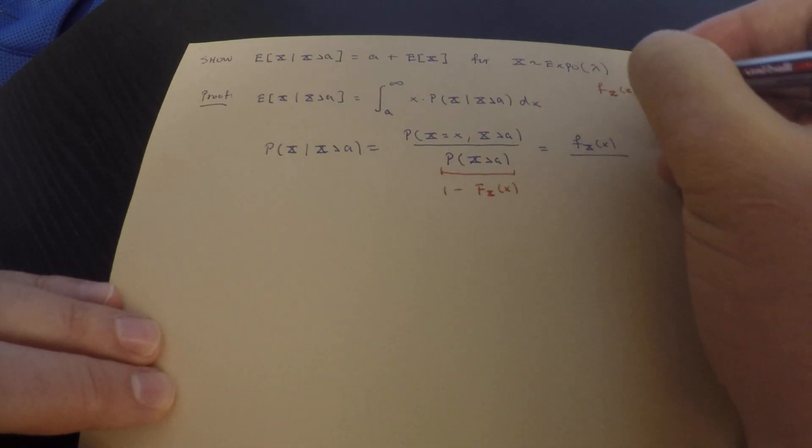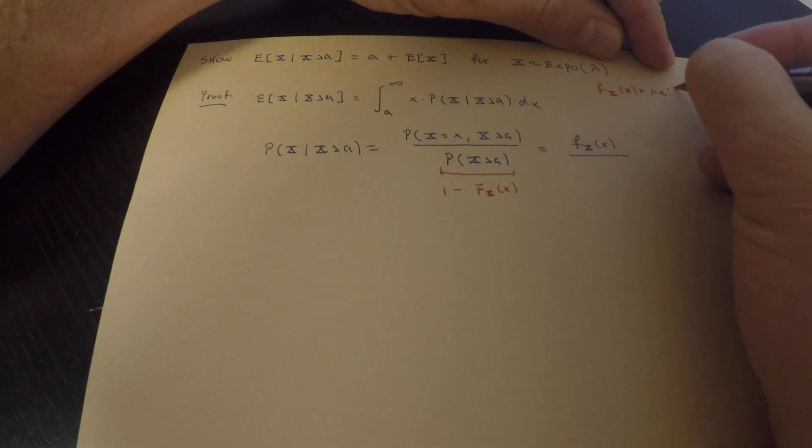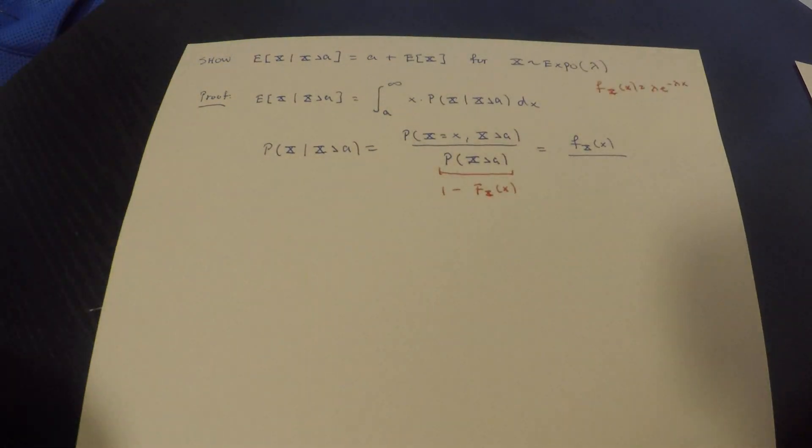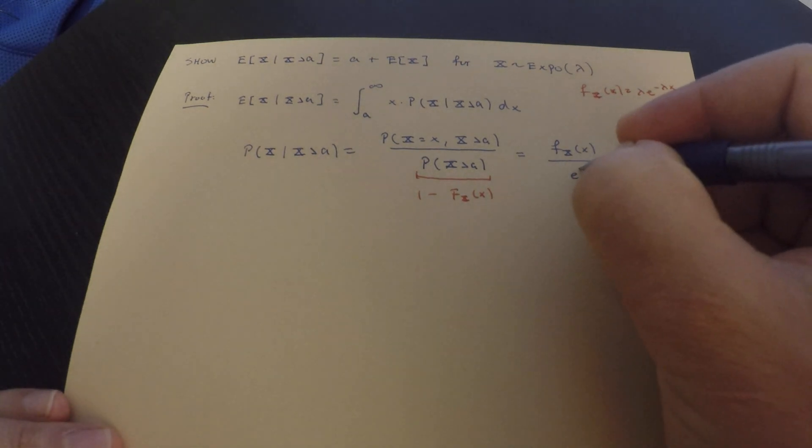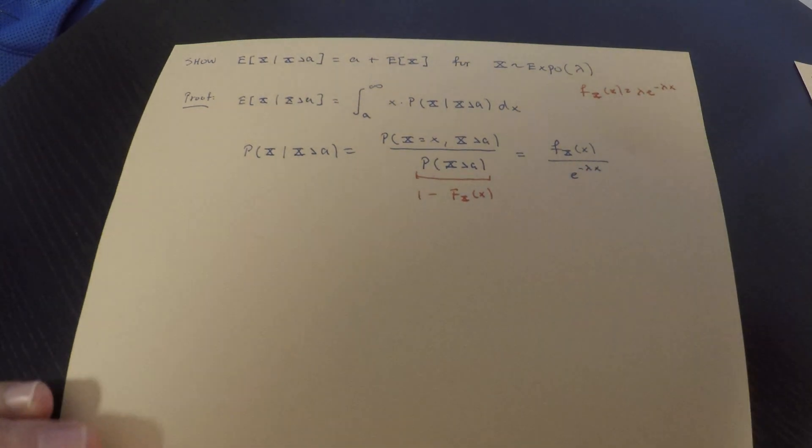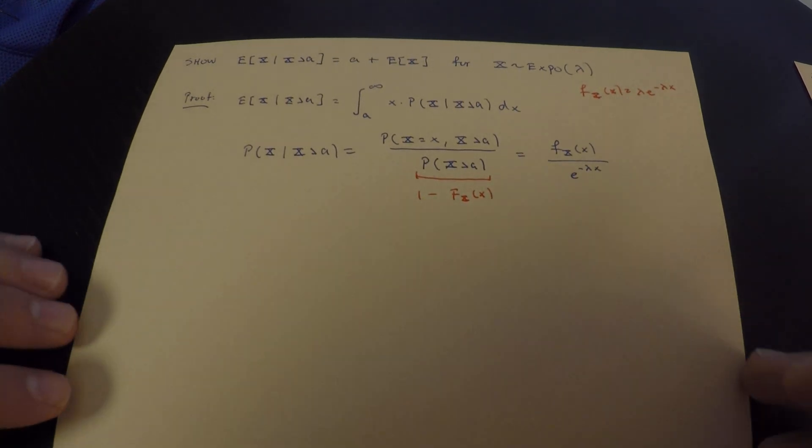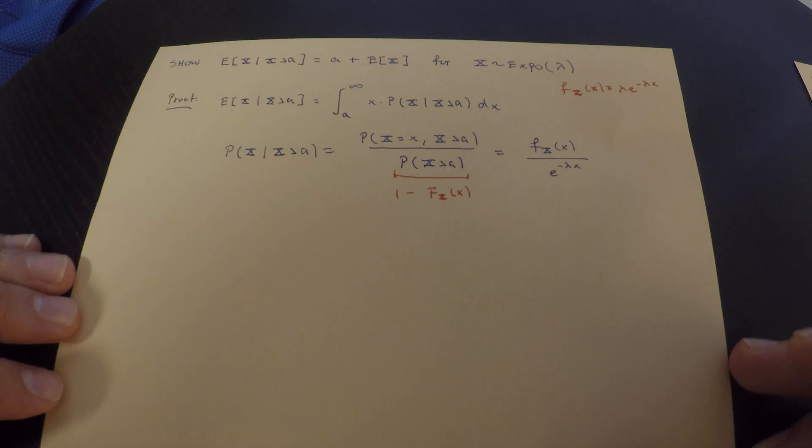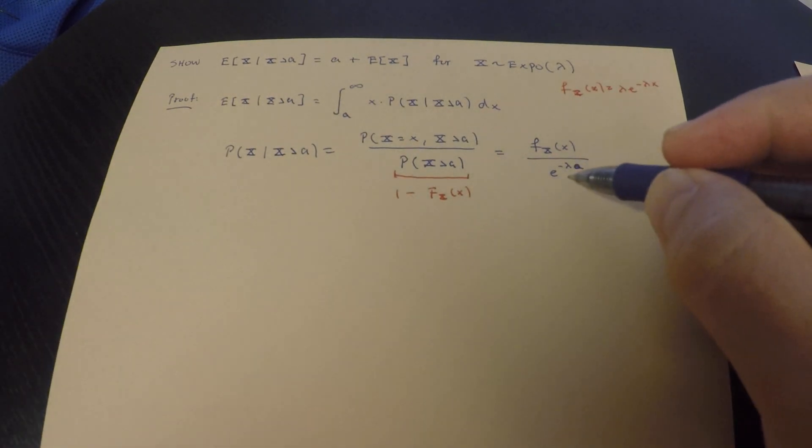The PDF is, of course, lambda e to the negative lambda x. Let's use that, because then this is just e to the negative lambda x. Nothing going on. Quite straightforward. And so, this is lambda a, e to the negative lambda a.